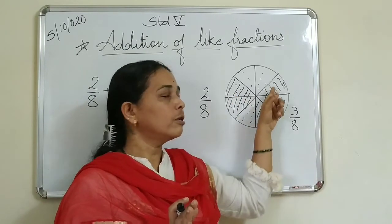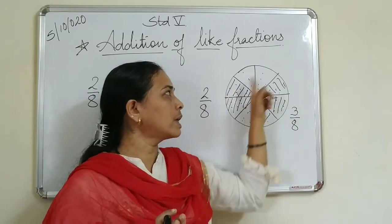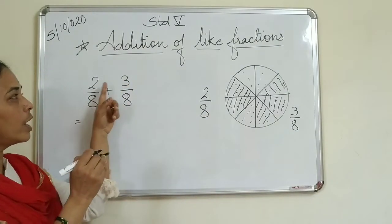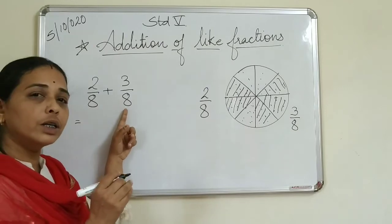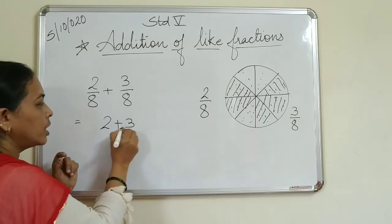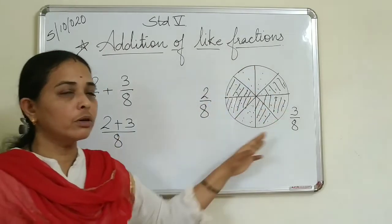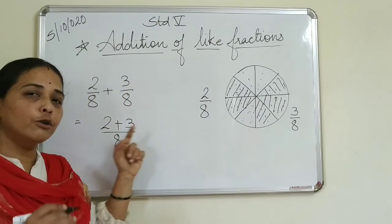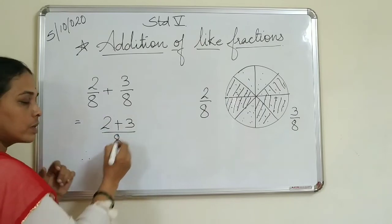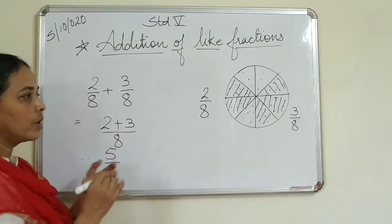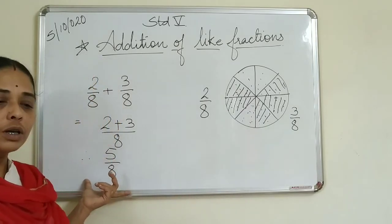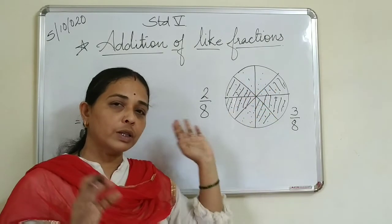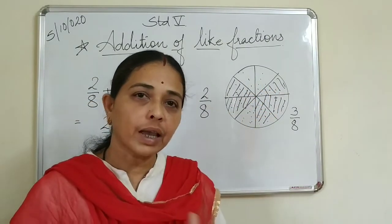We are only adding the numerator - 2 plus 3. We are not adding eight. So while adding, we have to add only the numerator; we don't add the denominator. Eight is common for both. So two plus three upon eight - the answer is 5 upon 8. Now directly we will add like fractions without needing the diagram explanation.